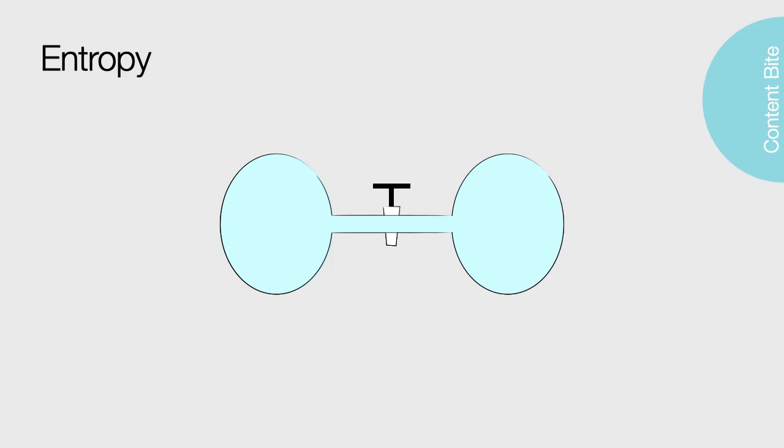This was on a macroscopic or big scale. What if I actually could see individual atoms? Now, I'm going to have the same two bulbs, but I'm going to introduce four atoms. What happens when I have four atoms when I open the trap?